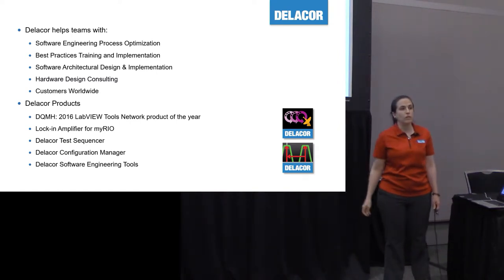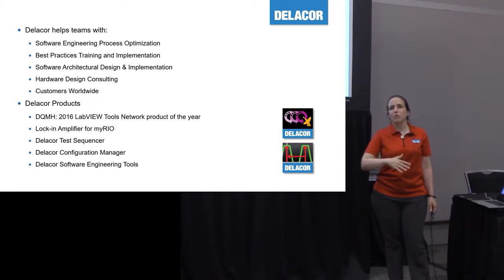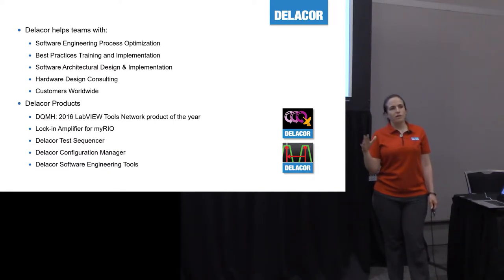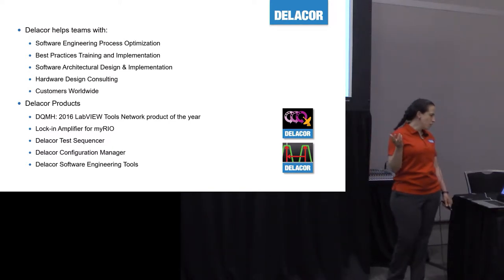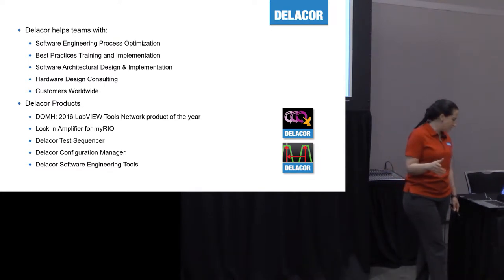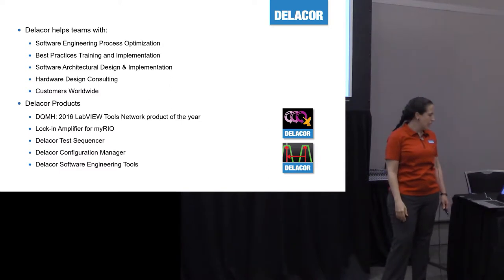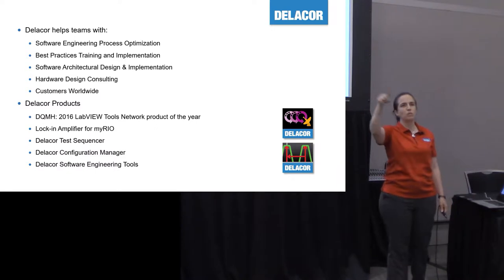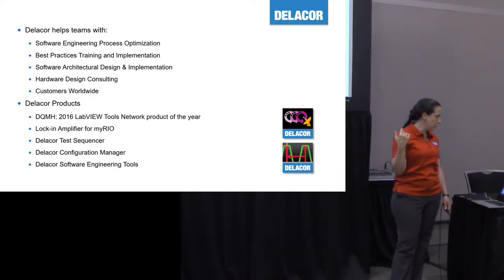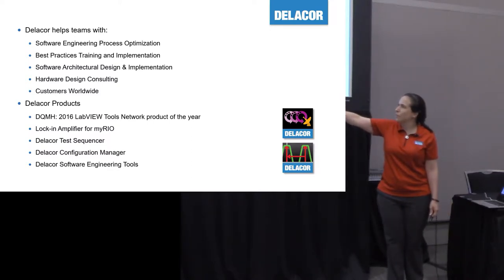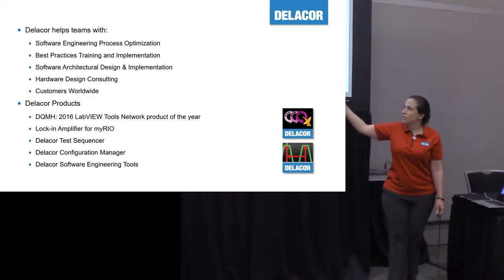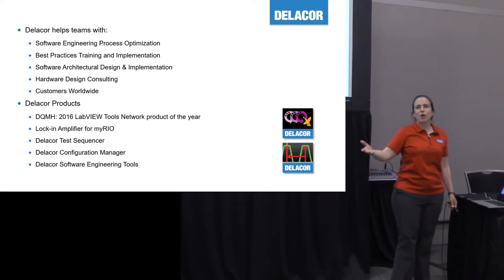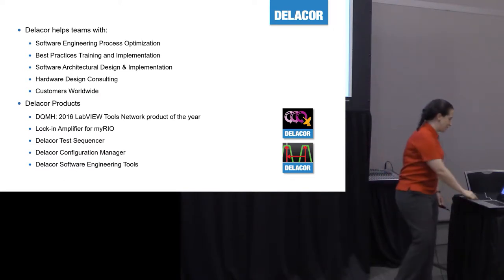Delacore is a small consulting firm based in Austin, Texas. I started this about 11 years ago. We focus on working with teams going from one person to a team of people who need assistance with source code control, architectures, et cetera — or teams that realize they're actually doing software and it's time to adopt good programming practices. We have customers worldwide and consult on hardware design. As for our products, we have the DQMH — which won Product of the Year in 2016 and is a free product — the Lock-In Amplifier, and others like a test sequencer, configuration manager, and software engineering tools, all using DQMH as the underlying framework.